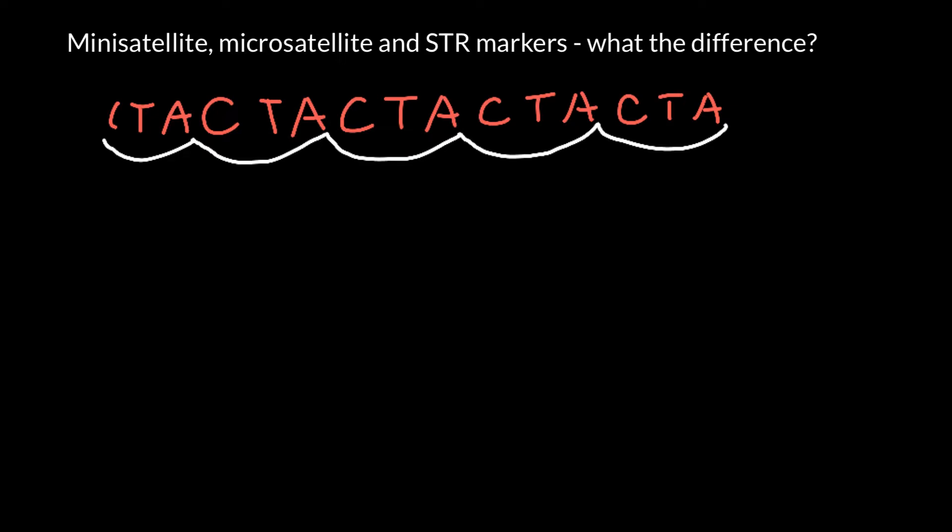In this example we have one, two, three, four, and five repetitions. Usually such sequences we call microsatellite. By the way, this is an example of a microsatellite, and at the same time I want to tell you that microsatellite and STR markers are just synonyms and mean the same thing.